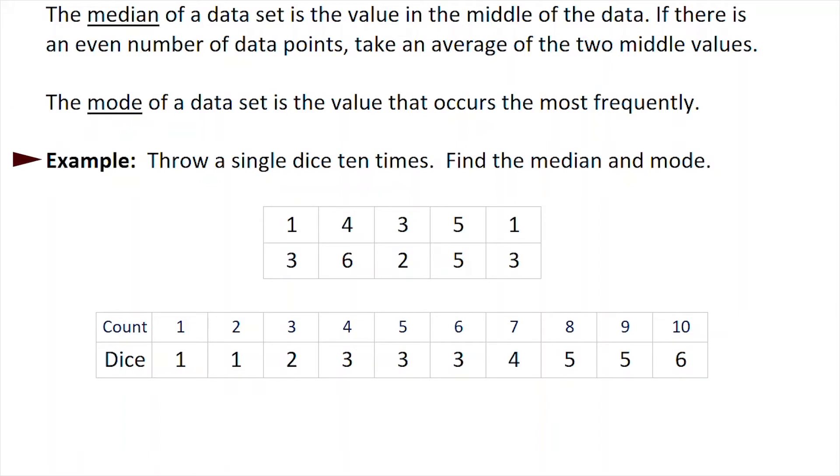In our example, we've got a single dice that's been thrown 10 times and we want to find the median and the mode. We will start with the median. To do that, we order our dice throws from the lowest to the largest, and we see we have a count of 10. The two values exactly in the middle are actually both 3. So for the median, the average of 3 plus 3 divided by 2 is still just 3.